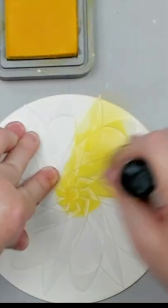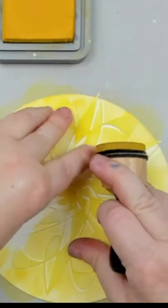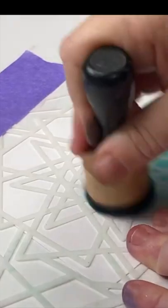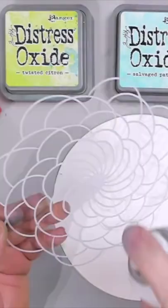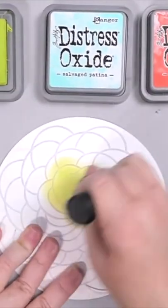Using stencils can be stressful, especially if they bleed underneath. If you're using inks, it's best to use a dauber and most likely your inks won't bleed unless the stencil moves. In that case, you can use tape or repositional spray adhesive to keep the stencil in place.